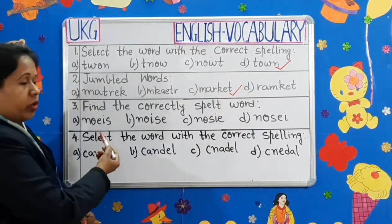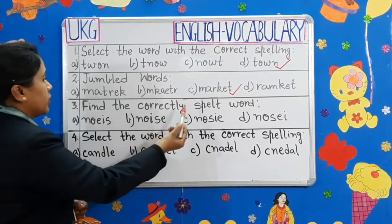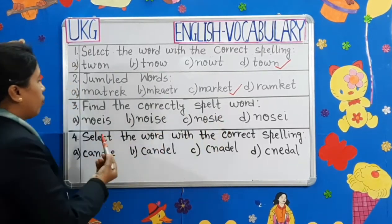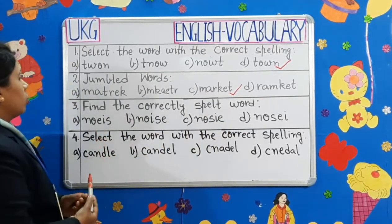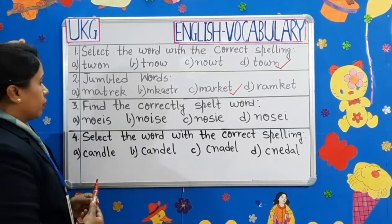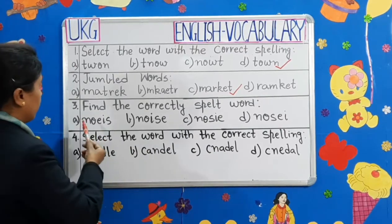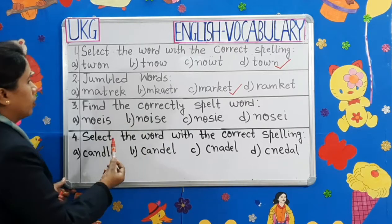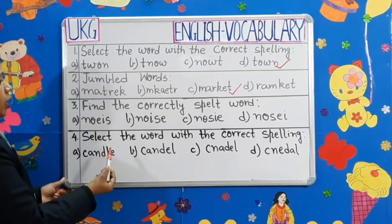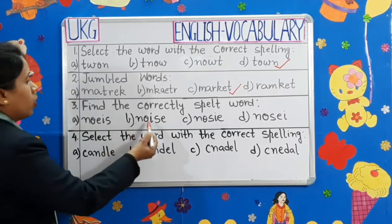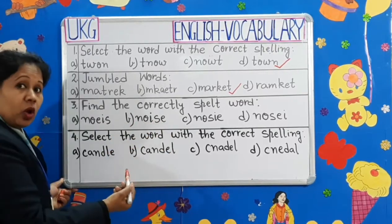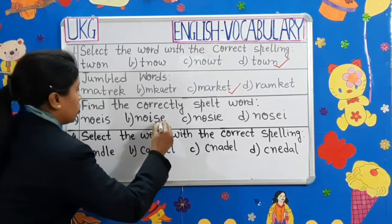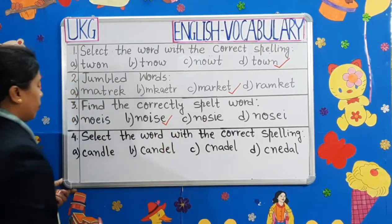Question 3: Find the correctly spelt word. You have to find out which word is correct. See children, which one is correct? Yes — N-O-I-S-E. Noise. It sounds correct. So, we will put a tick on it.